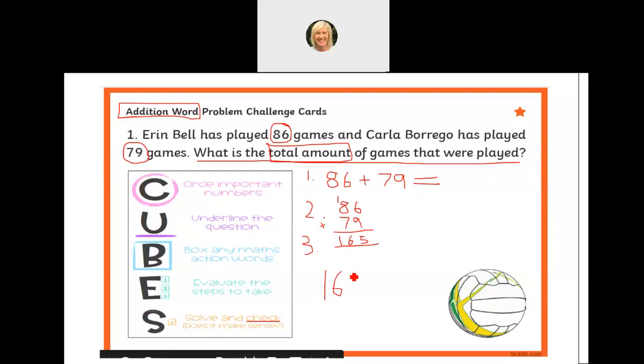I could write it in a sentence: I could write 'the total amount of games played was 165,' or I can write '165 games played.' I don't mind how you do it, but you must put the units for this answer to make sense. Sorry it's taken me so long to manipulate my mouse. Games played.